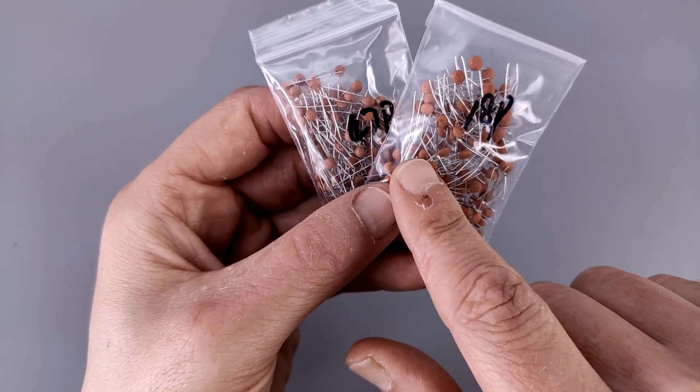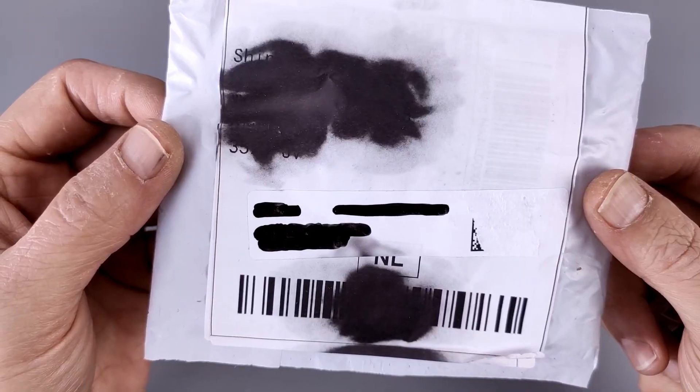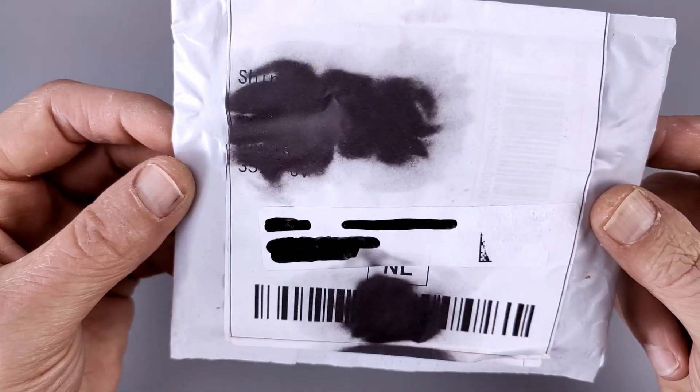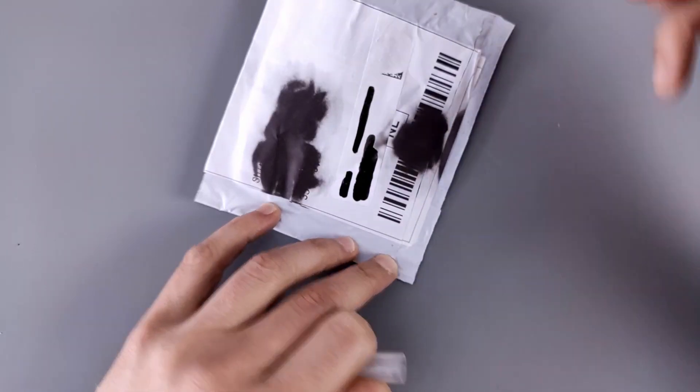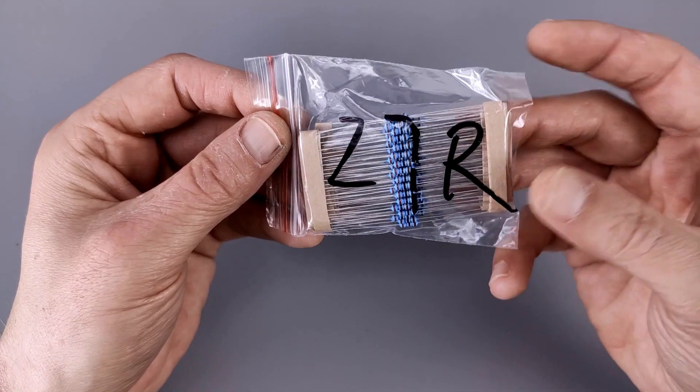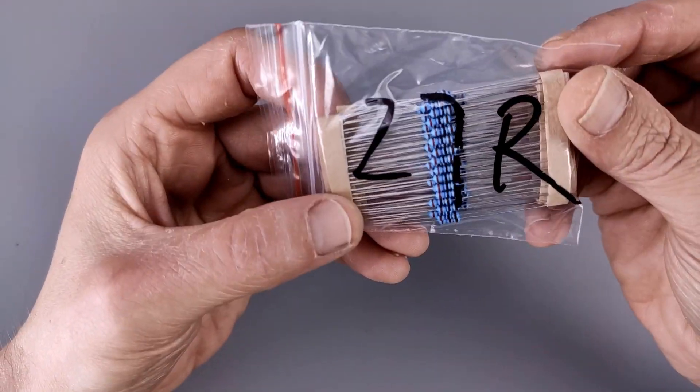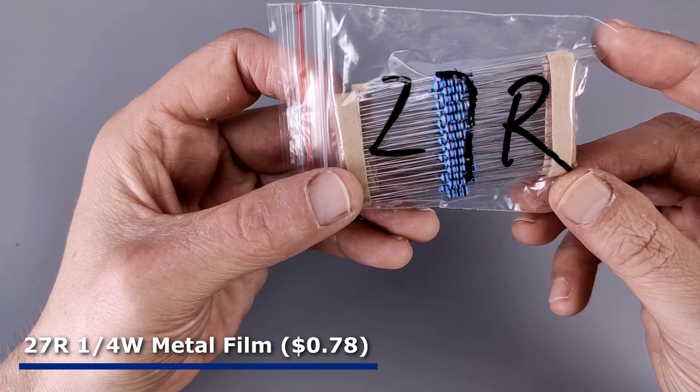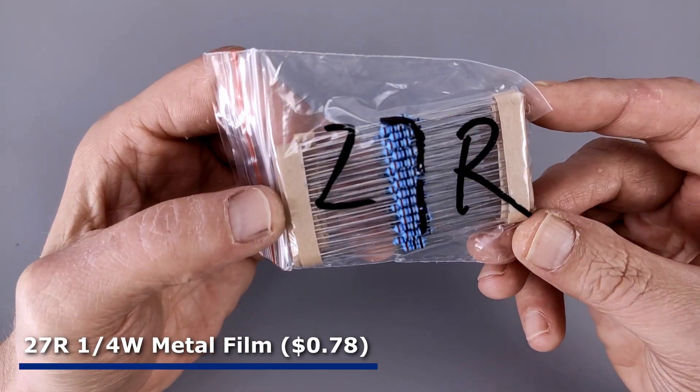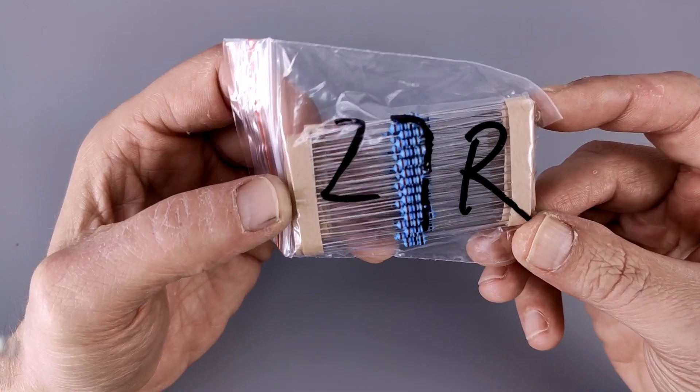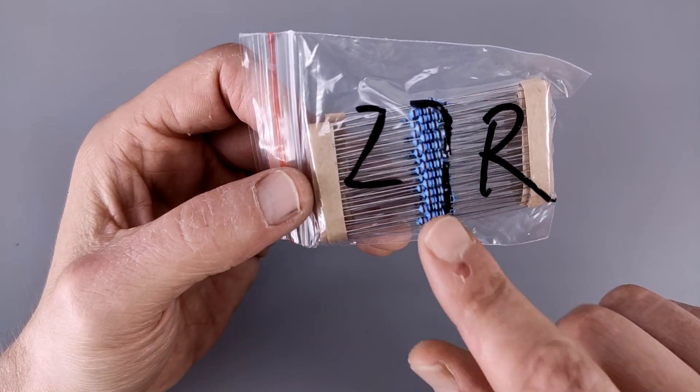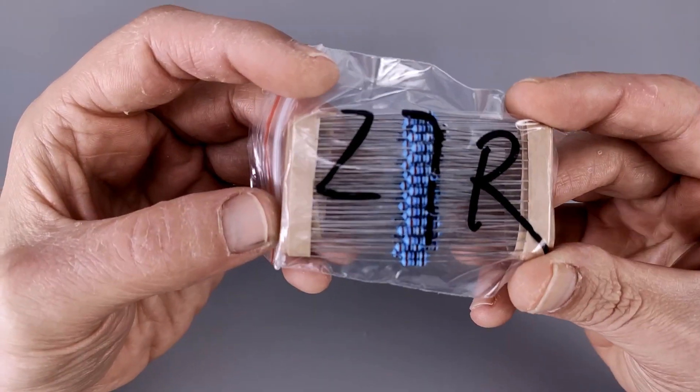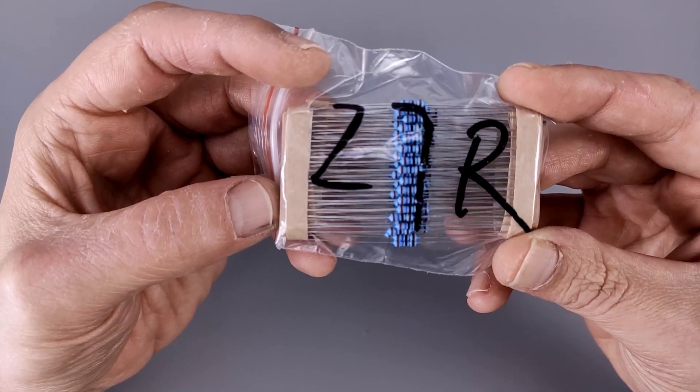But of course the through hole version of it. Next one, again a hidden description. Resistors, and these are 27 ohm resistors at least that's what's written on the package. I can't read color code so I'll have to believe it and again these are for the UPDI programmer, the through hole version.